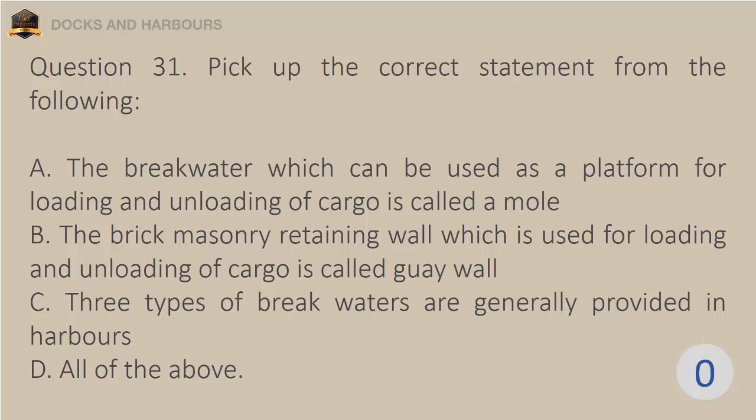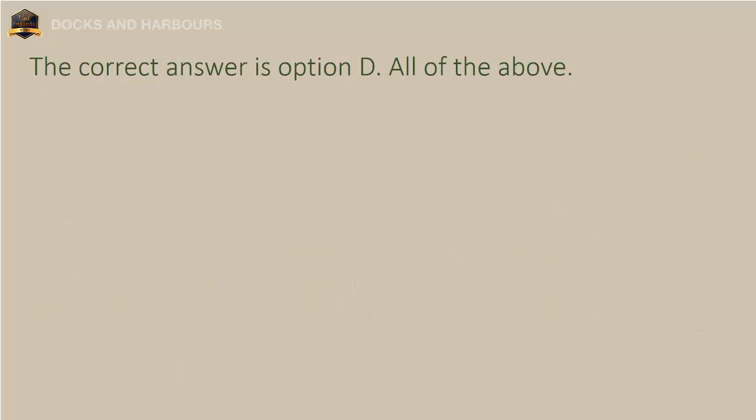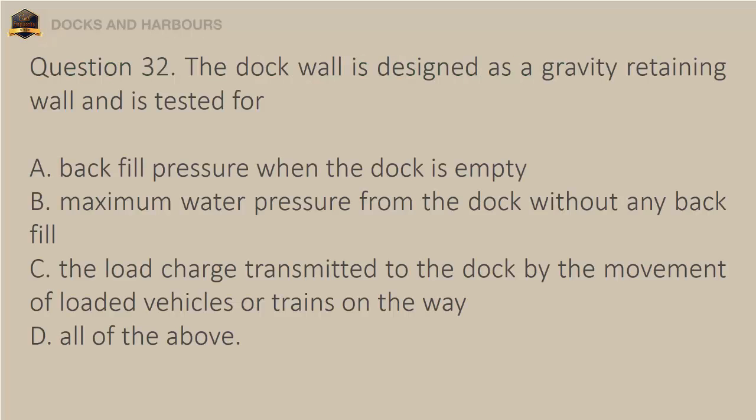Question 32. The dock wall is designed as a gravity retaining wall and is tested for: a. Backfill pressure when the dock is empty. b. Maximum water pressure from the dock without any backfill. c. The load transmitted to the dock by the movement of loaded vehicles or trains on the quay. d. All of the above. The correct answer is option D: All of the above.